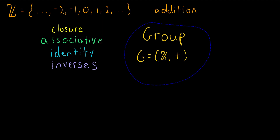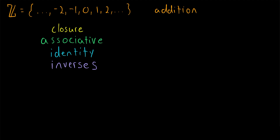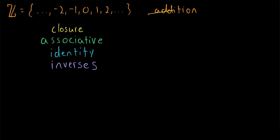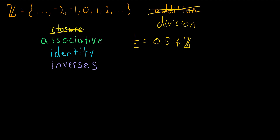Before revisiting the second half of the definition, let's see some contrast to these group axioms. For example, imagine instead of addition we had considered division. This is not going to give us a group with the integers, because what if we divide one by two? That's equal to one half or 0.5 — that's not an integer. So the integers are not closed under division. Also, zero is an integer, so what if we take three and divide it by zero? That is undefined, which is a pretty big problem.